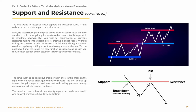Price action is almost never this perfect, however. Very often there will be fake-out breakdowns below support that buyers immediately buy up, just as there is occasionally fake-out breakouts above resistance that sellers immediately invalidate. The support and resistance lines on your chart should therefore be thought of less as hard and fast levels and more as flexible ranges that are important to be aware of. The next point to recognize about support and resistance levels is that resistance can turn into support and vice versa. If buyers successfully push the price above a key resistance level and they are able to hold those gains, prior resistance becomes potential support. It is important, however, that you wait for confirmation of previous resistance turning into support before entering a bullish trade. Without waiting for a retest of prior resistance, a bullish entry during a breakout could end up being nothing more than chasing a play at the top. You do not know if prior resistance will now function as support, and as such, you should exude caution before assuming that the uptrend will continue. The same ought to be said about breakdowns in price. In this image on the right, we see the price breaking down below support. The brief bounce back up toward the prior support level was met with selling pressure, turning previous support into current resistance.